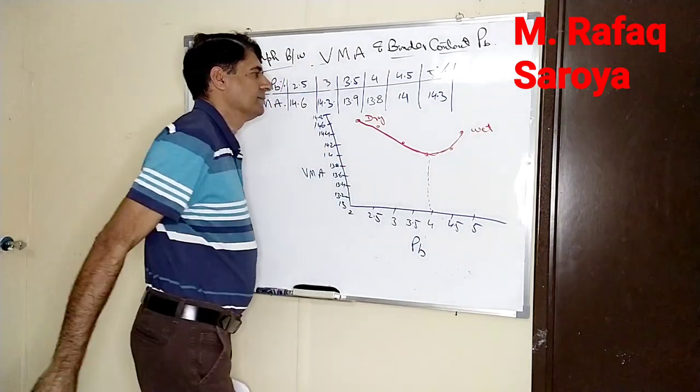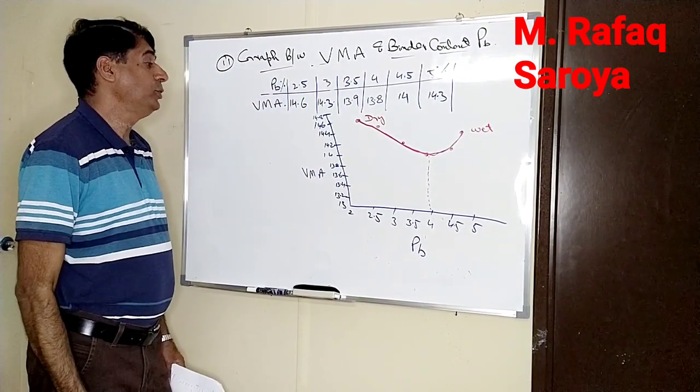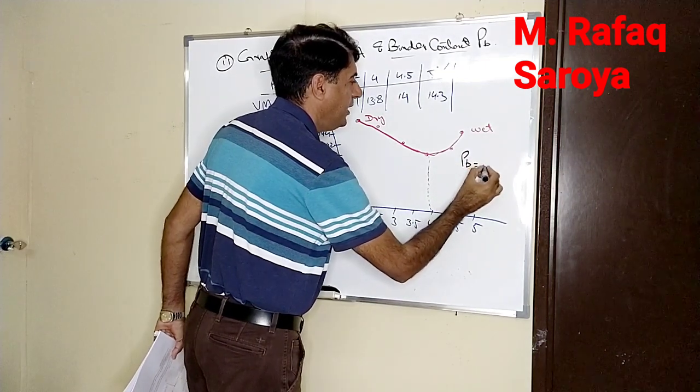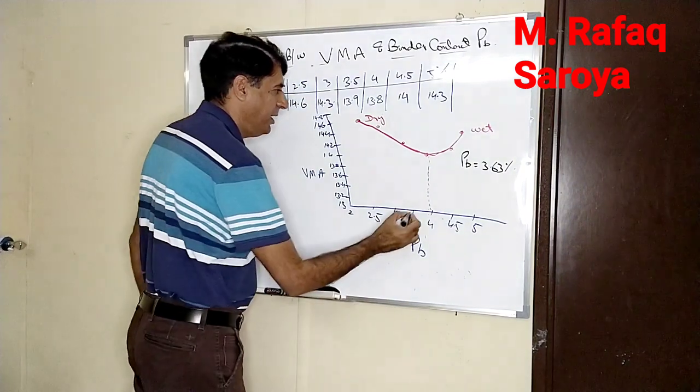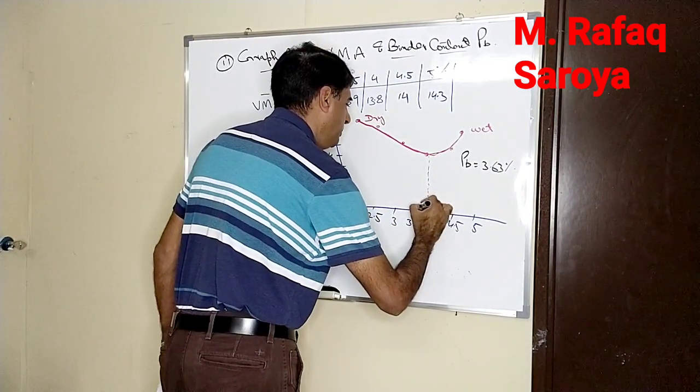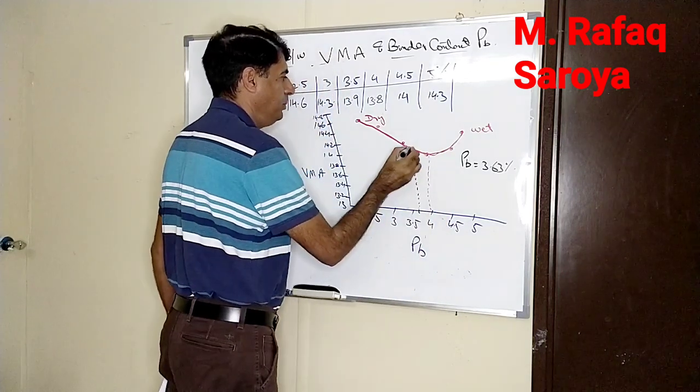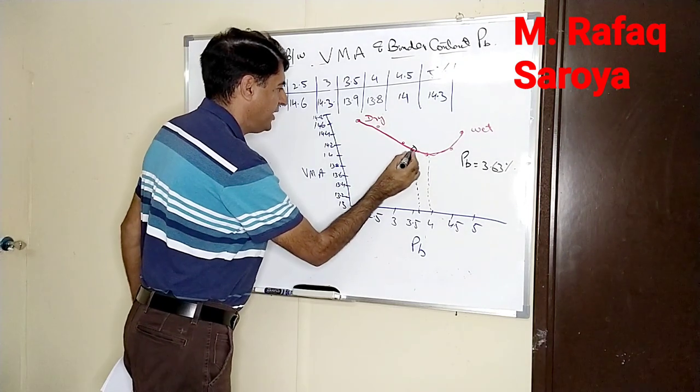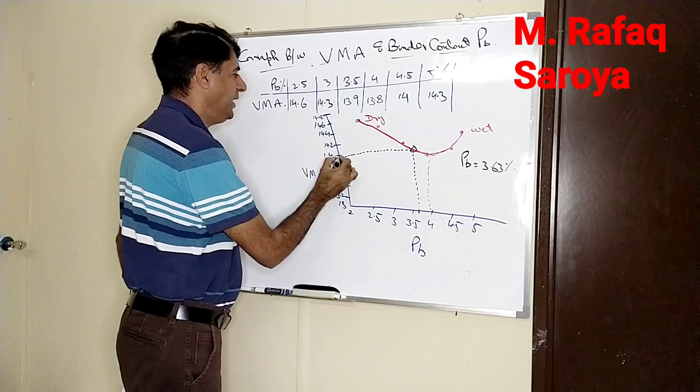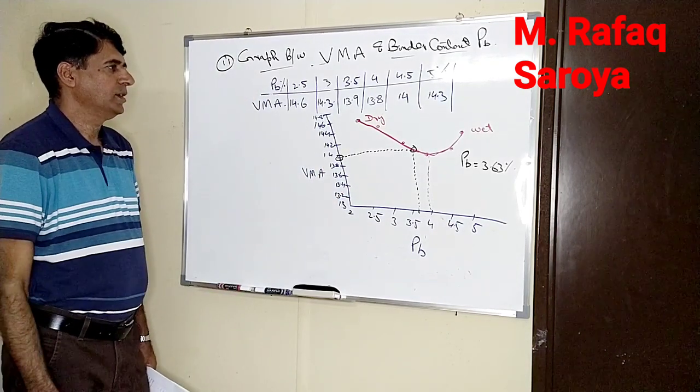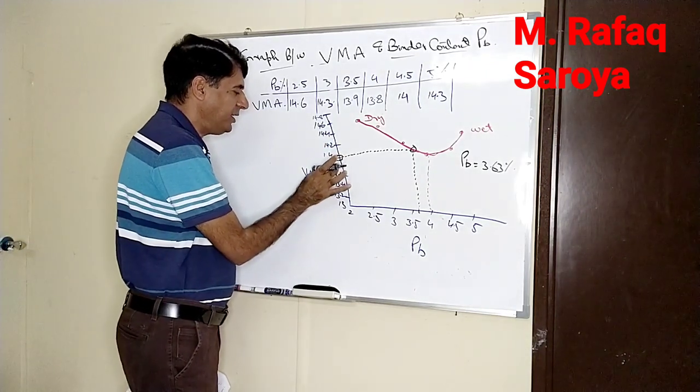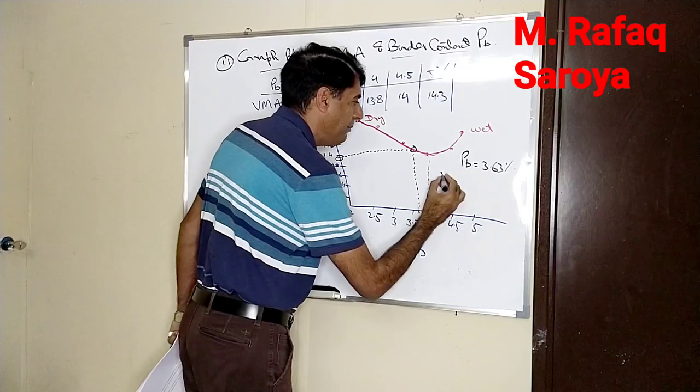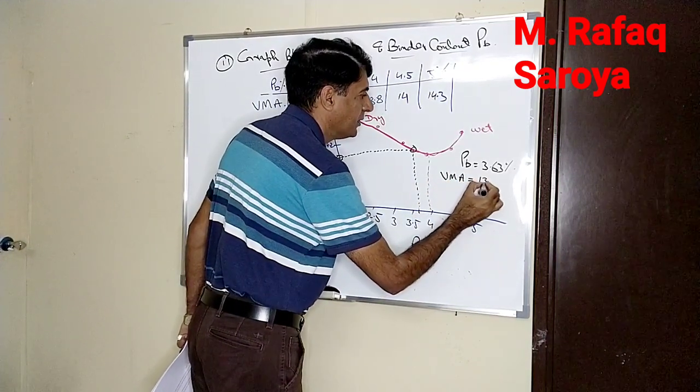Now what will we do? Our reference point is selected binder content PB equal to 3.63 percent. It means I am at this point. I will move and it is going to intersect the curve at this point. From this point I will move parallel to the x-axis and it is meeting at this point. So here it shows that my binder content is 3.63 percent. With respect to this point, the amount of VMA calculated from this graph is 13.9 percent.